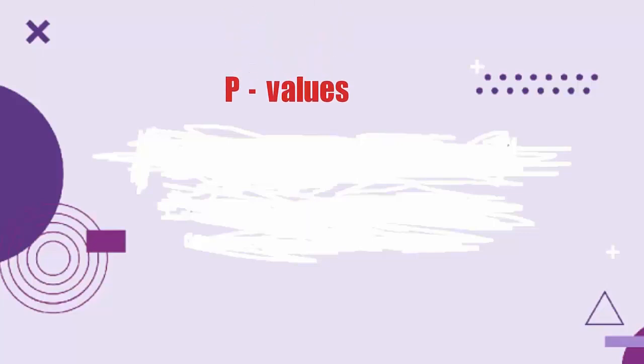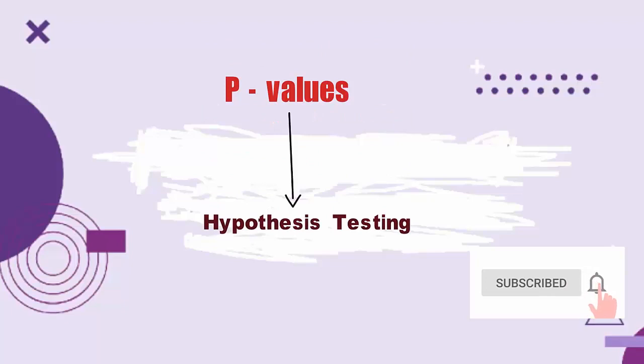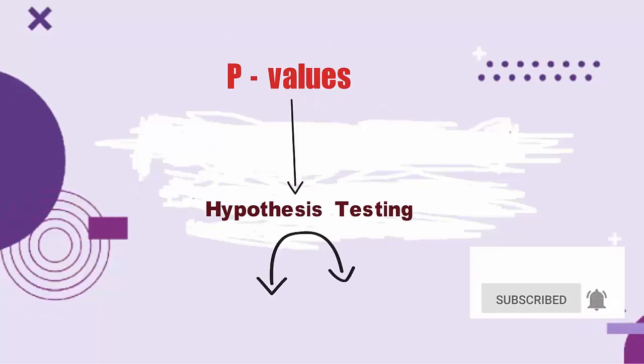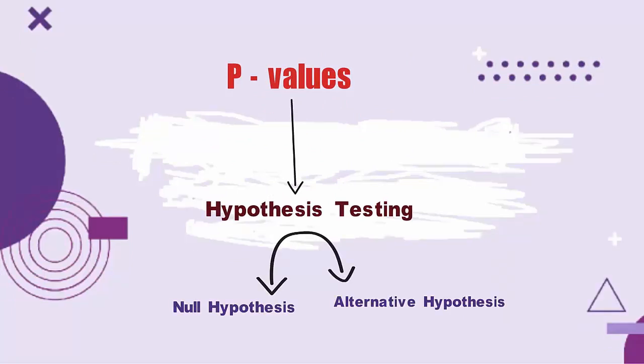P-values are used in hypothesis testing to help decide whether to reject the null hypothesis. The smaller the P-value, the more likely you are to reject the null hypothesis.